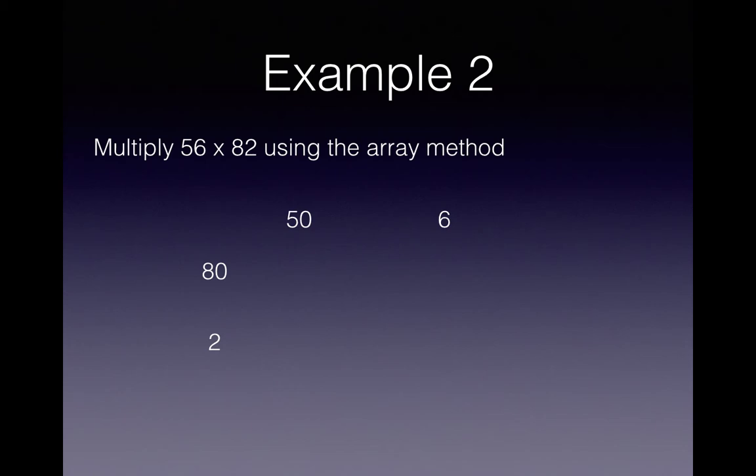So there'll be four numbers when we multiply them together. First of all the 50 by the 80 gives you 4000. Then the 80 by the 6 gives you 480. The 50 by the 2 gives you 100 and the 2 by the 6 gives you 12.